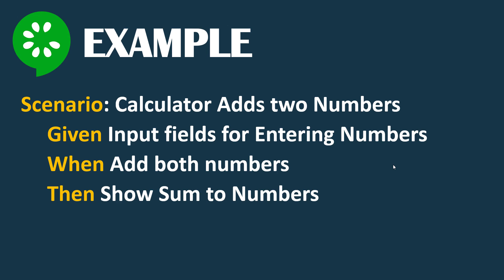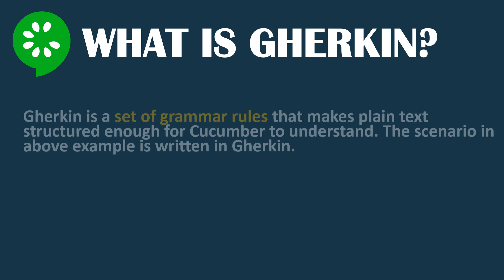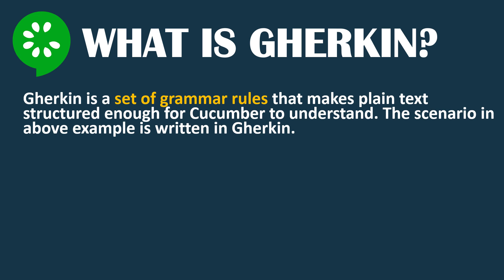Here I have highlighted 'Scenario', 'Given', 'When', and 'Then' because when we talk about Cucumber we need to follow some set of rules in order to write our specification file. This is where Gherkin language comes in. Gherkin is simply a set of grammar rules that makes plain text structured enough for Cucumber to understand. If we don't follow those rules, Cucumber will not understand what we are talking about.